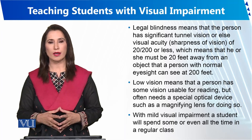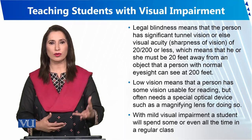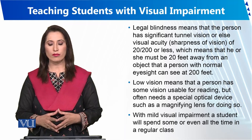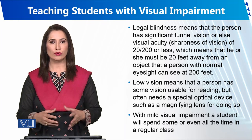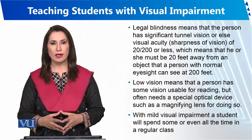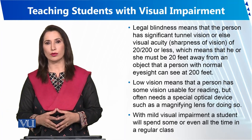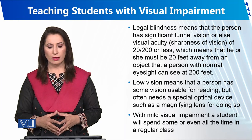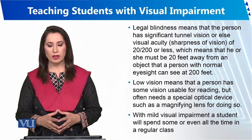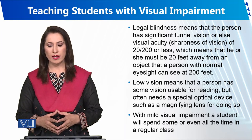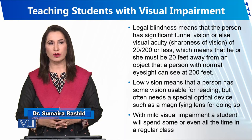If there is low vision, a person can see some things but not all. A person with low vision has some vision usable for reading, but often needs a special optic device such as a magnifying lens to do so.